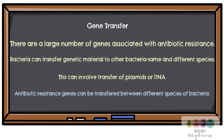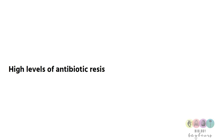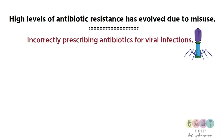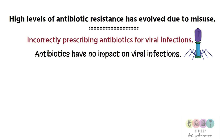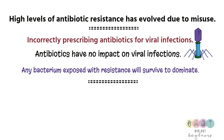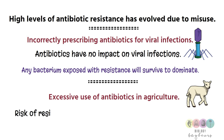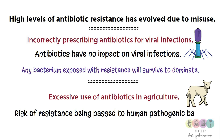Today we have very high levels of antibiotic resistance, and it's widely accepted that this is down to the misuse of antibiotics. An example is incorrectly prescribing antibiotics for viral infections — antibiotics have no impact on viral infections, so you're just exposing any bacteria with resistance to this chemical unnecessarily, and they'll survive and dominate. Another example is the excessive use of antibiotics in agriculture, where antibiotics given to farm animals increase the risk of resistant genes being passed into human pathogenic bacteria through gene transfer.